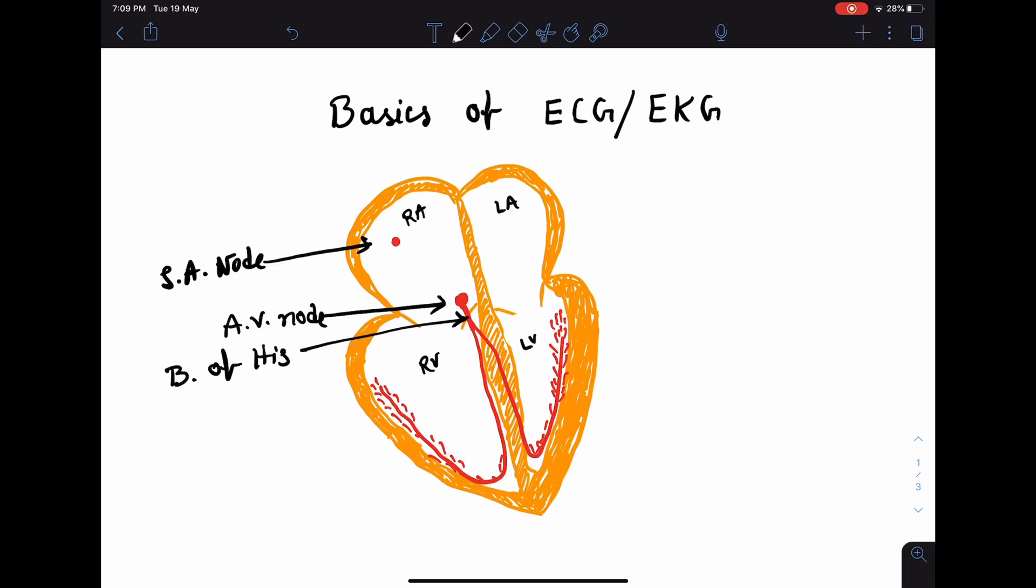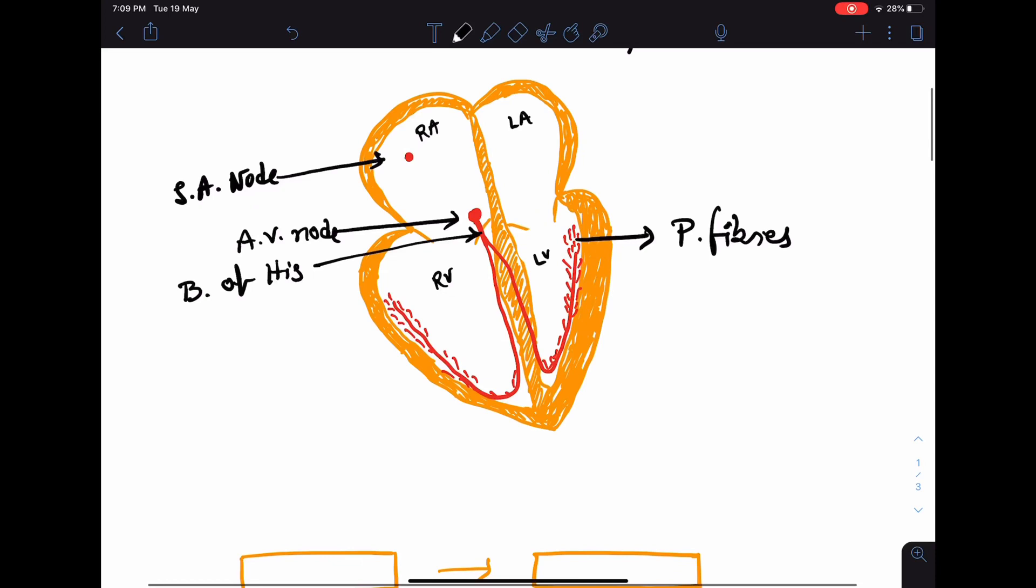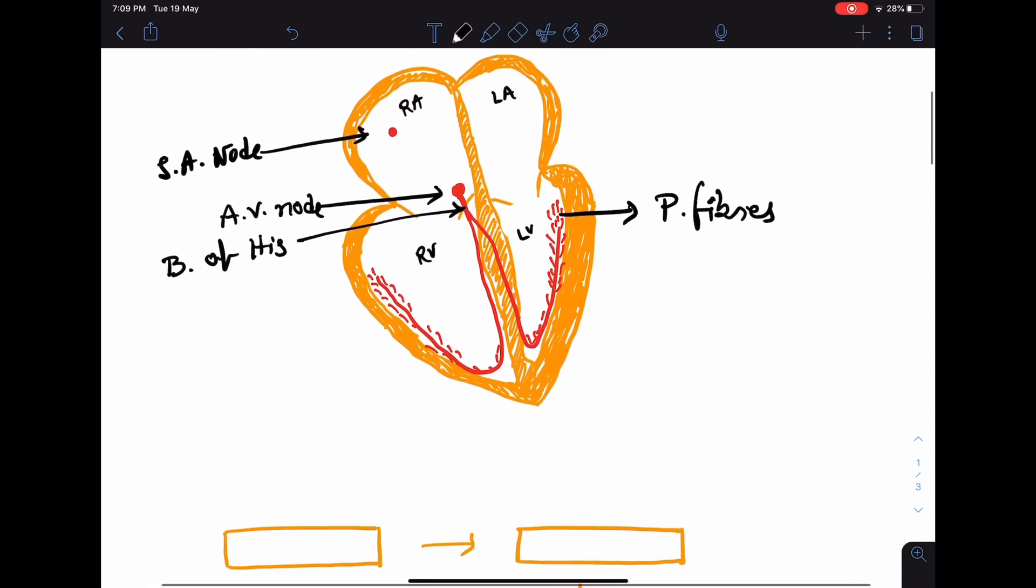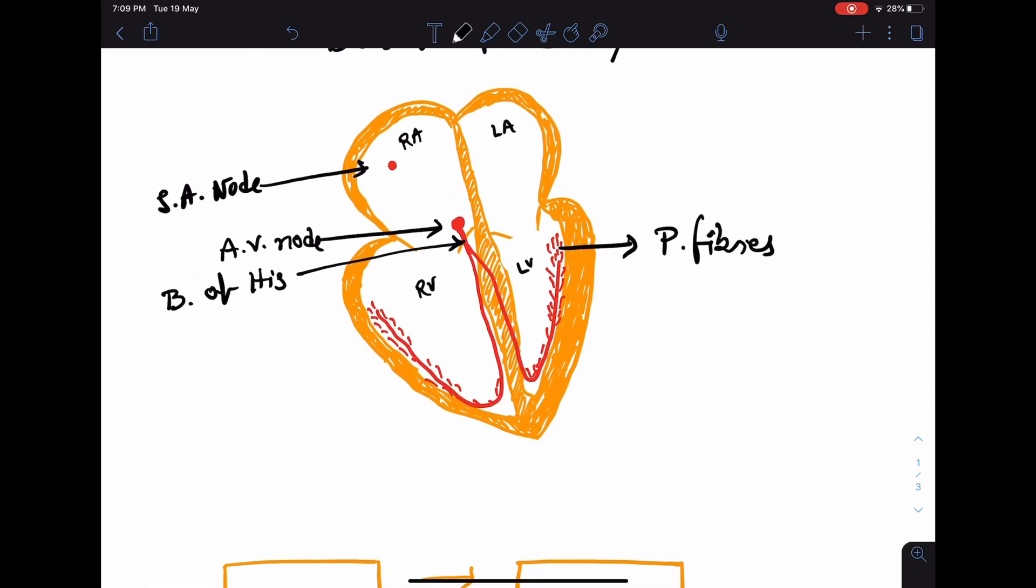Through the small Purkinje fibers, the electrical impulse spreads in the ventricle, thereby ultimately resulting in contraction of both the right and left ventricle. The left branch of HES again gets divided into two fascicles: anterior fascicle and posterior fascicle.